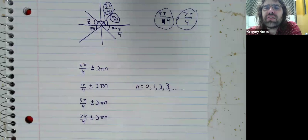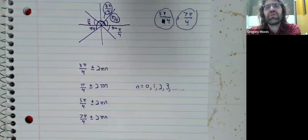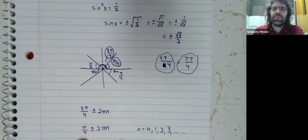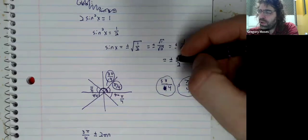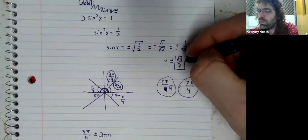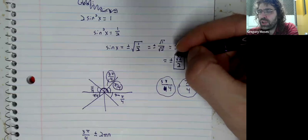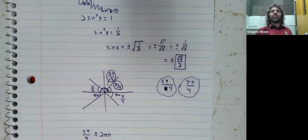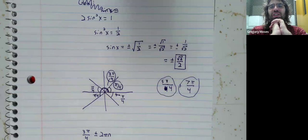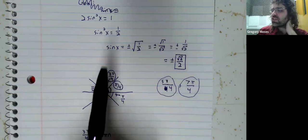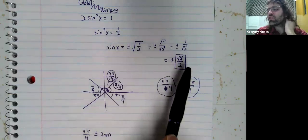So something that this example and something that the example from the last video had in common was that we wound up with a nice number here. I mean, the square root of 2 over 2 might not look so nice, but it's a number we've seen before. We can solve the sine of x is the square root of 2 over 2 mentally.